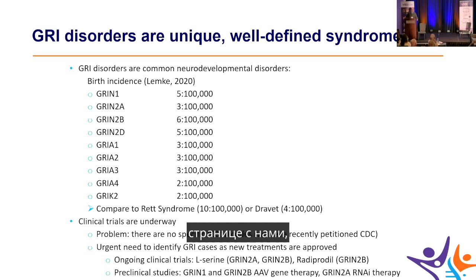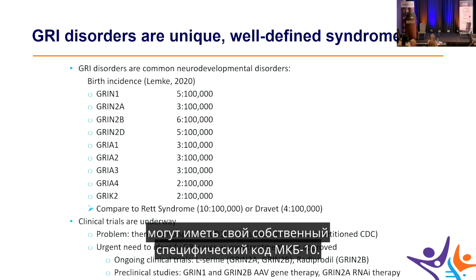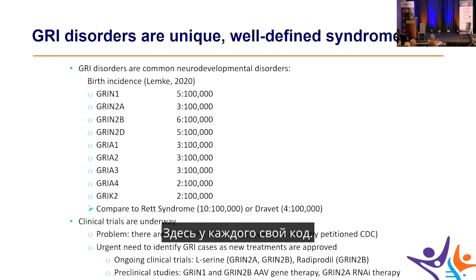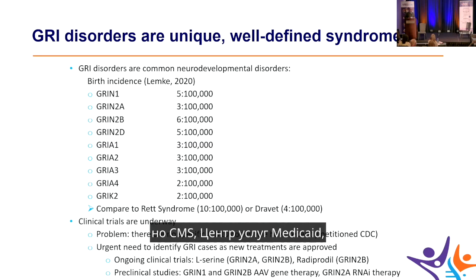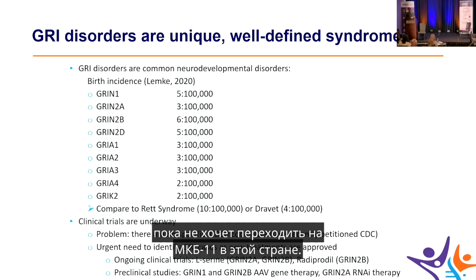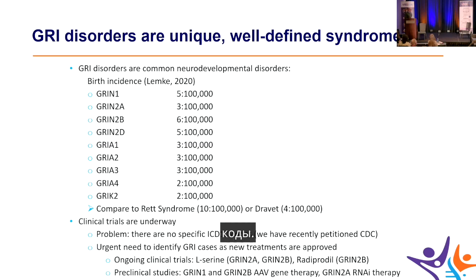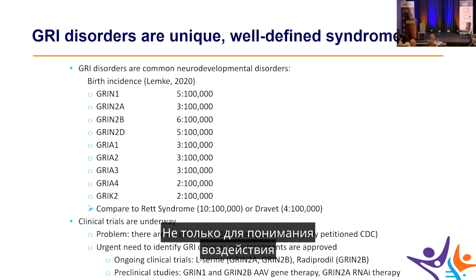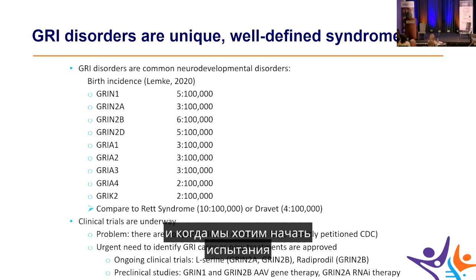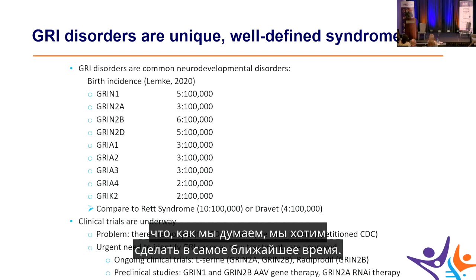A group has been working with the CDC to get specific ICD-10 codes assigned to each syndrome. Europe has moved to ICD-11 where each syndrome has its own code, but CMS — the Center for Medicaid Services — is not yet ready to adopt ICD-11 in the US. Getting these codes is critical for understanding disease impact and for identifying patients for clinical trials involving treatments like L-serine or radiprodil.